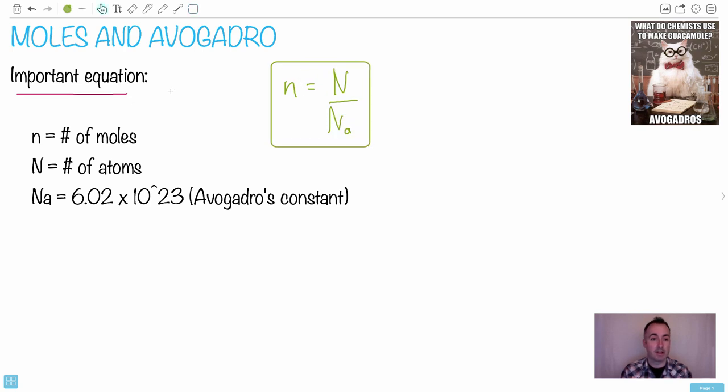So what this really means: n is the number of moles—this is the important thing to be counting. Capital N is the number of atoms you have, and Na, this N with a little subscript a, that's 6.02 times 10 to the 23, which is known as Avogadro's constant.